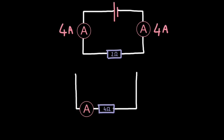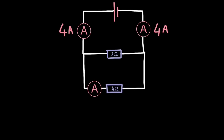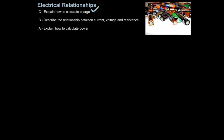If one parallel loop has a higher resistance than the other, more current will flow through the pathway with lower resistance. For example, 2.67 amps flow down the path with least resistance while 1.33 amps flow down the path with more resistance. In other words, the pathway with the greatest resistance will have the lowest current. We'll look at the specific calculations in another tutorial. So that is how you describe the relationship between current, voltage and resistance.